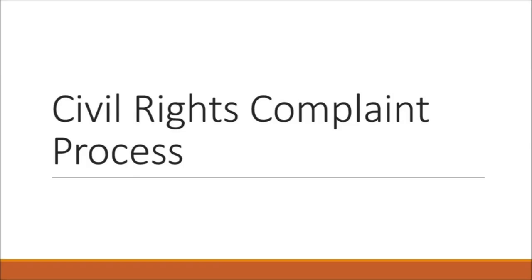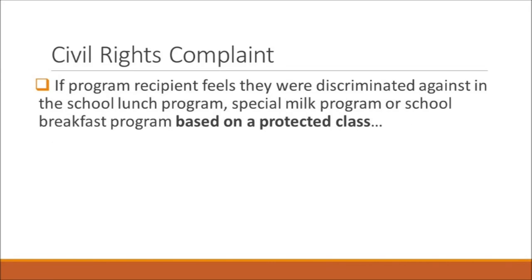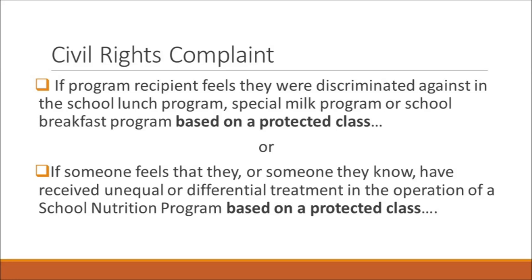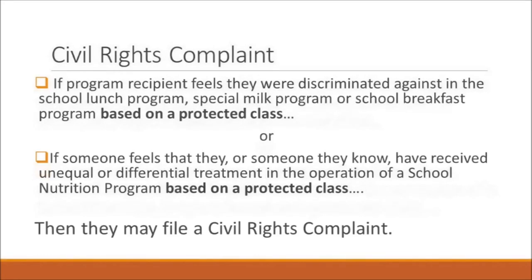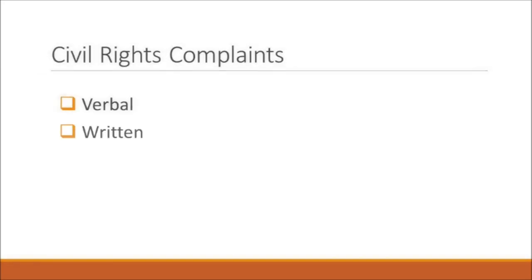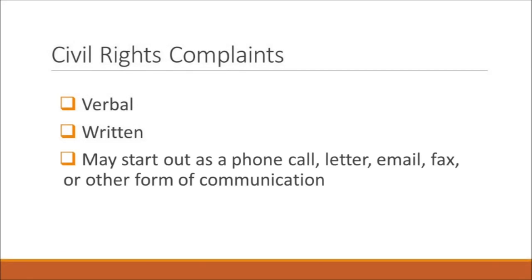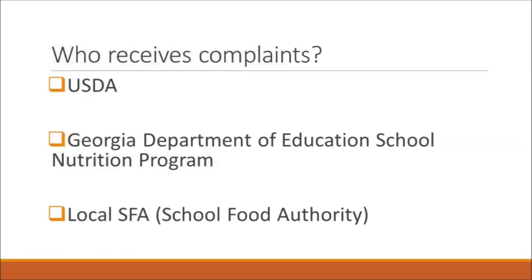If a program recipient feels they were unlawfully discriminated against in the school lunch program, special milk program, or school breakfast program based on a protected class, they may submit a civil rights complaint. Even if the complainant does not call their concern a civil rights complaint, it qualifies as one if it alleges unequal treatment on the basis of a protected class. Civil rights complaints may be verbal or written, and may start as a phone call, letter, email, fax, or other form of communication. Complaints may be anonymously submitted to the USDA, the Georgia Department of Education School Nutrition Program, or the local sponsor School Food Authority.